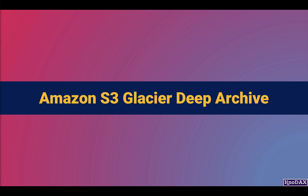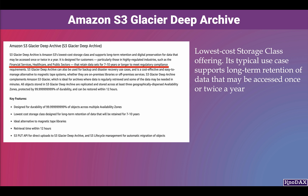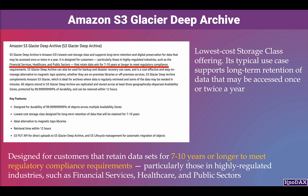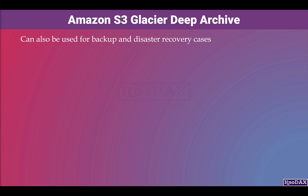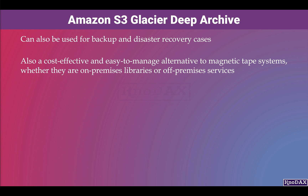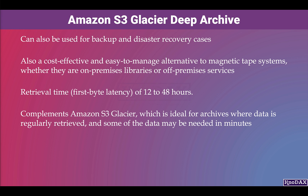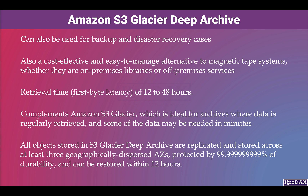Amazon S3 Glacier Deep Archive is the lowest cost storage class, with a typical use case of long-term retention for data accessed once or twice a year. It is designed for customers retaining data sets for seven to ten years or longer to meet regulatory compliance requirements, particularly in highly regulated industries such as financial services, healthcare, and public sectors. All objects are replicated across at least three geographically dispersed AZs, protected by a durability of 11 nines, and can be restored within 12 hours. It is also a cost-effective alternative to magnetic tape systems.